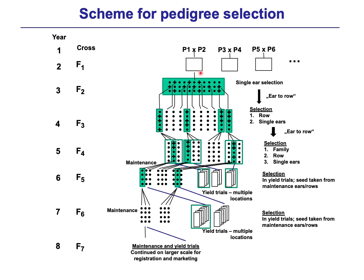We harvest completely and so in the F2 generation a lot of seeds. The population size depends on the breeder. I would say between 1,000 and 10,000 single plants will then be grown, and we start single ear selection in the field according to plant health, ear type, etc. We take a selected ear and make classical ear-to-row.